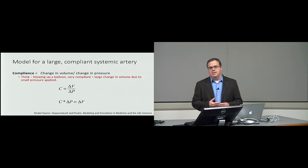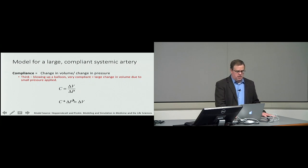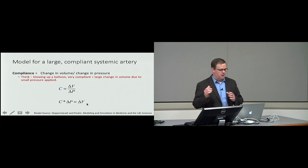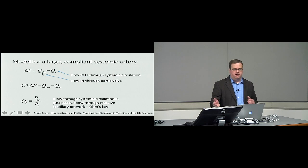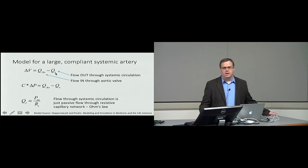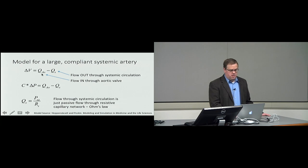Our goal with this model is to watch changes in systemic arterial pressure throughout the heart cycle, and see how it changes as a function of compliance of the arteries. We take the compliance expression and rearrange it: C × ΔP = ΔV. The change in volume is driven by the flow through the aortic valve — the amount flowing into the systemic artery — minus how much leaks out through the systemic circulation through all the arterioles and capillaries. So our equation becomes: C × ΔP = flow in minus flow out.